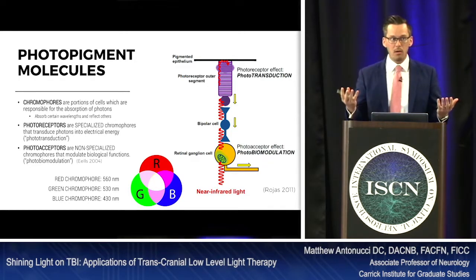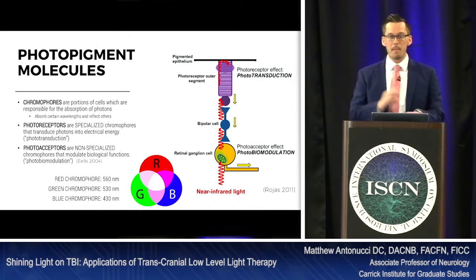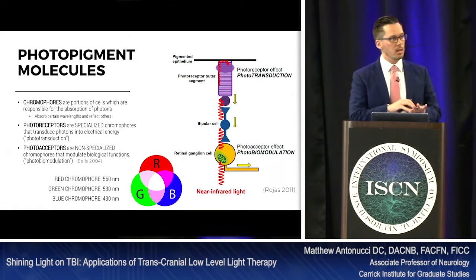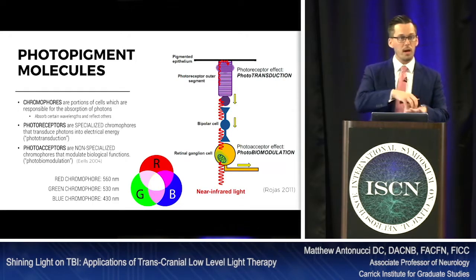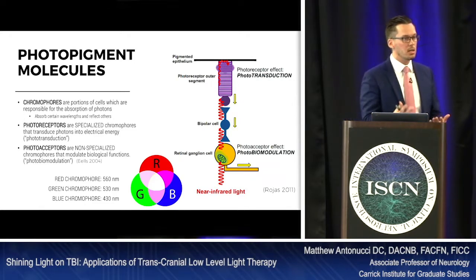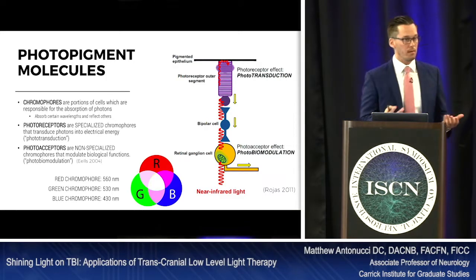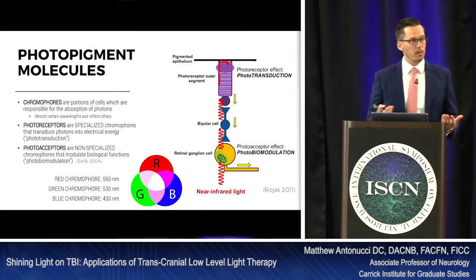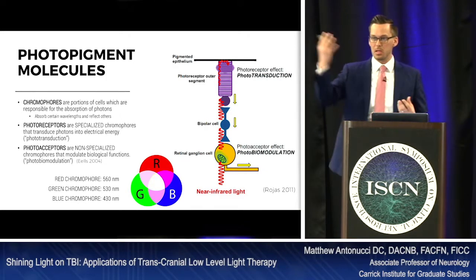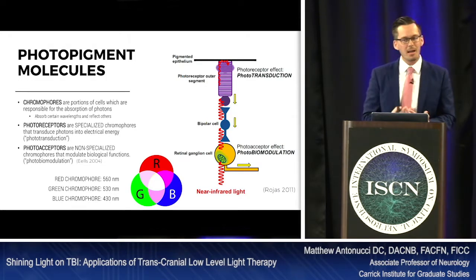We know of a couple really common chromophores. Melanin, in our skin, is a chromophore. When ultraviolet light hits our melanin, we have a chemical reaction that creates pigmentation and we start tanning. It also exists in plants — chlorophyll is a type of chromophore as well. It accepts sunlight and creates a cellular mechanism inside of that plant.